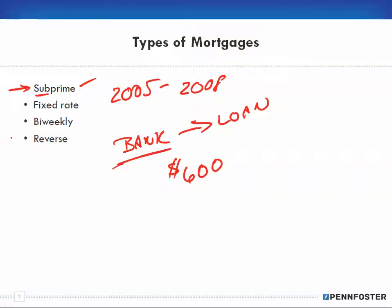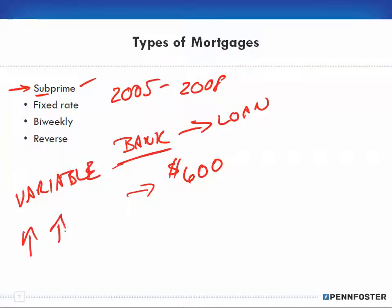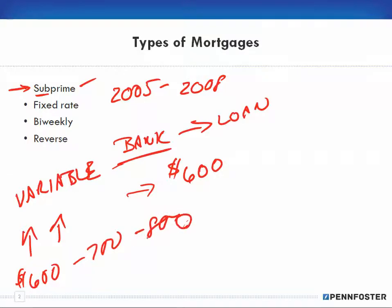The bank would tell people: as long as you have a job and you want your payment at $600 and you can afford it, that's great. But what they didn't tell you was that it was a variable rate. As the interest rate went up, your payment would go up. If you could only afford $600 at that rate, and then the rate went up, your payment went to $700, then $800. People couldn't afford the payments anymore, and you saw all the foreclosures hit around 2008.